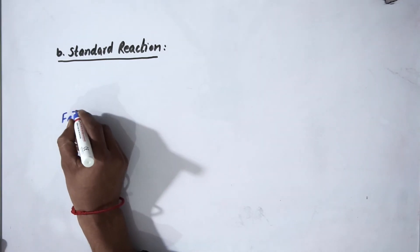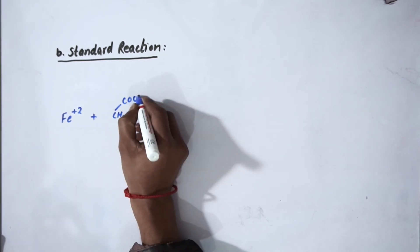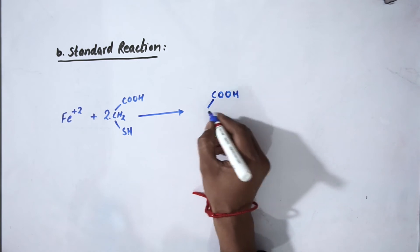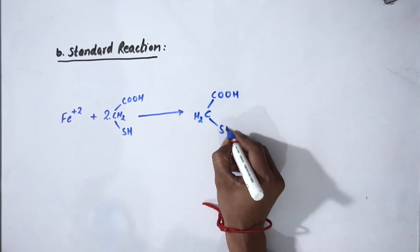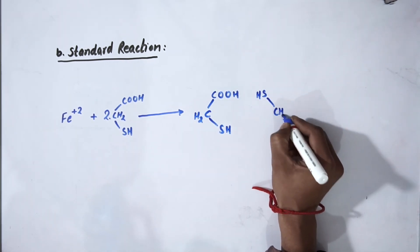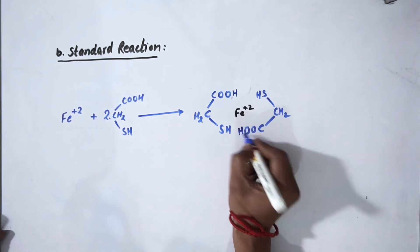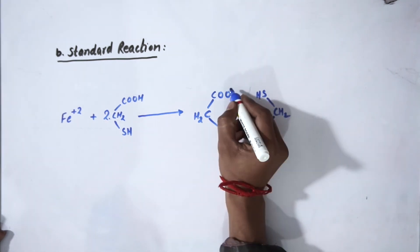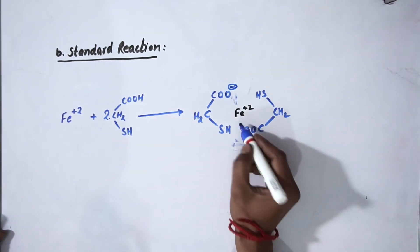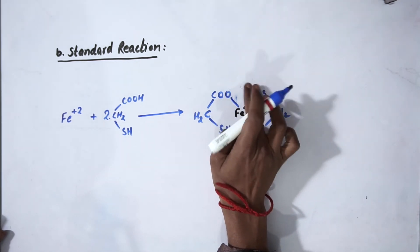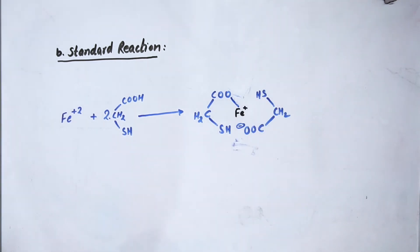Now we will write the standard reaction. The reaction will be the same. Here also, ferrous will react with two molecules of thioglycolic acid. We are going to write in the same way, another molecule in opposite direction, that is C=O will be here. Here will be ferrous. Now remove one hydrogen from here and one hydrogen from both carboxylic groups. The negative charge will be produced and they will make bonds with iron respectively.